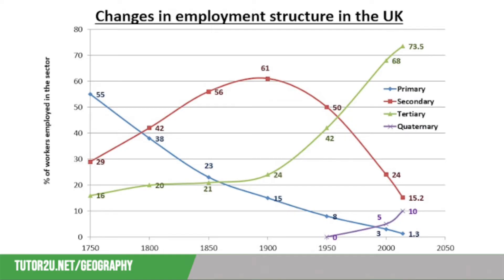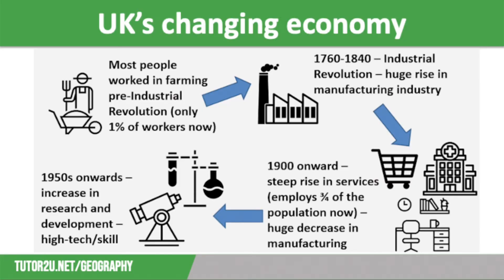Over the last few hundreds of years, the UK's employment structure has shifted significantly, as you can see in this graph. Up until 1800, most UK workers were employed in agriculture and mining — primary industries involving extracting raw materials, specifically growing crops, raising livestock, and mining coal and iron ore.